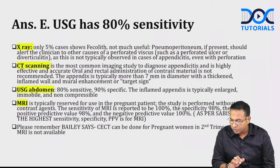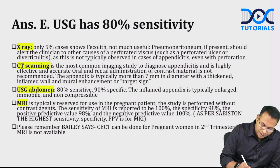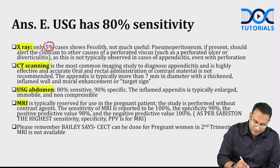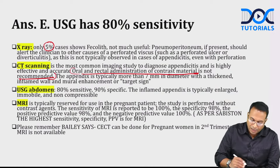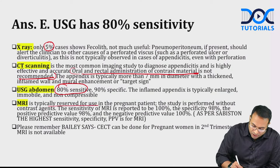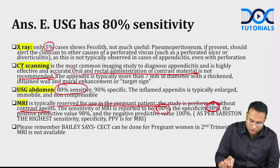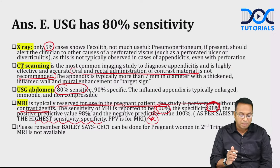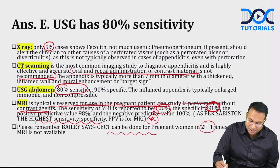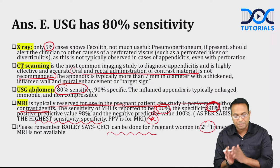Ultrasound is only 80% sensitive for appendicitis. MRI with gadolinium contrast is used in pregnant women — actually MRI without contrast agents is done, with 100% sensitivity and 98% specificity. The correct answer is E: MRI without contrast is advised, not MRI with gadolinium. Bailey says CT can be done in the second trimester if MRI is not available.